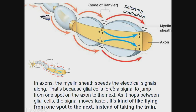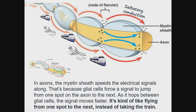In axons, the myelin sheath speeds electrical signals along. Glial cells force a signal to jump from one spot on the axon to the next. As it hops between glial cells, the signal moves faster — it's kind of like flying from one spot instead of taking the train. It flies as it travels through the myelin sheath, then slows down at the node of Ranvier. This is called saltatory conduction, as the signal jumps from one node to the next.